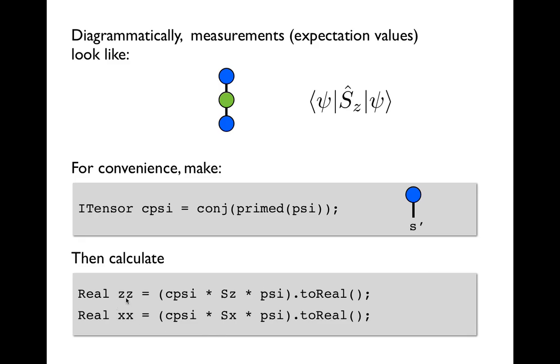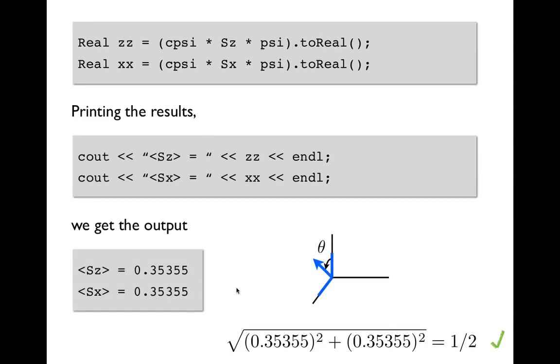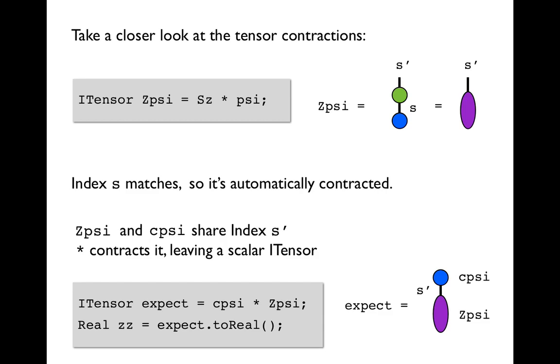Now we get two different real numbers zz and xx. And we can print the results. And we see sure enough that we get the same value for these two expectation values. And that makes sense because our spin was tilted at a 45 degree angle off the z axis. So its projections onto the z and the x axis ought to be the same. And we can check that they have the proper size to describe a spin 1/2.